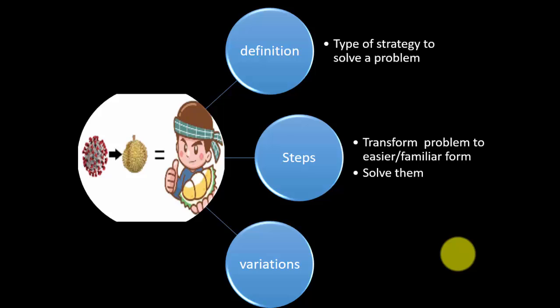There are three variations of Transform and Conquer. The first one is Instance Simplification. We simplify the instance, simplify the input. The second one is to change representation, to change the input or instances into another representation that's easier to be solved.